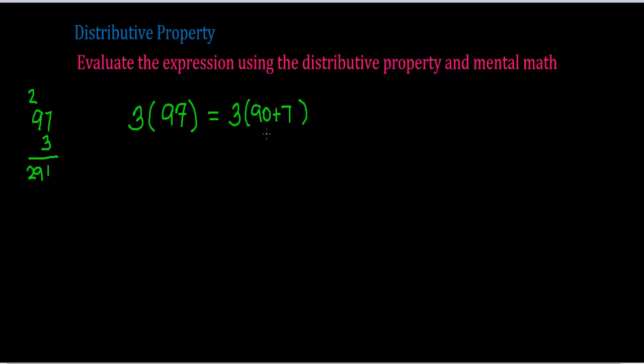Well, in your head you say 3 times 90 is 270. Using the distributive property, right, this is 3 times 9 is 27, add a zero, you get 270. Then I can do 3 times 7, which is 21. There you've reached that 270 plus 21 is 291, and you can do that in your head by using the distributive property.